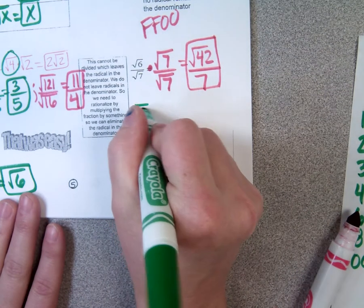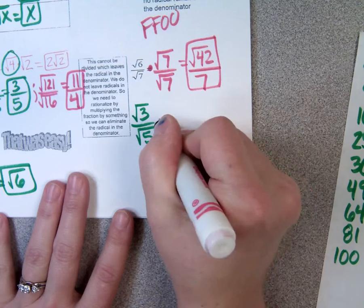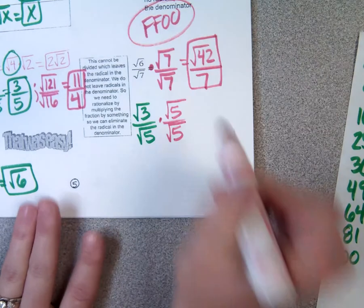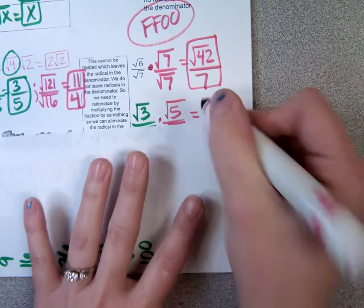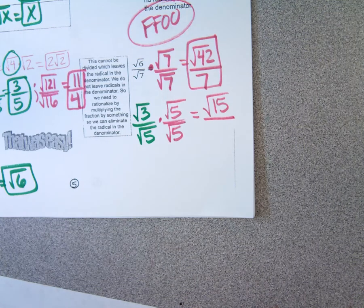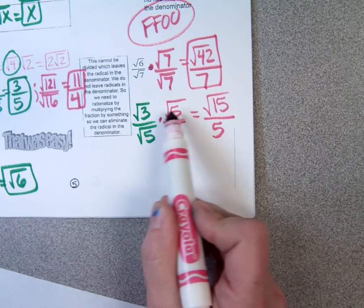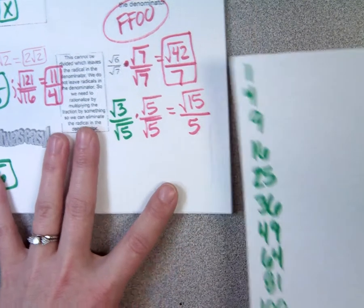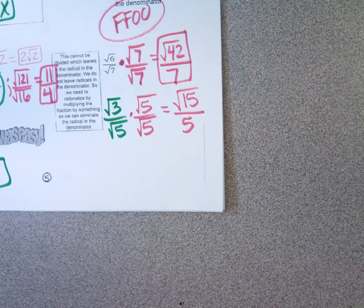Let's try square root of 3 over square root of 5. The foo-foo is square root of 5 over square root of 5 — whatever's in the denominator over itself. Multiply the numerators: square root of 3 times square root of 5 is square root of 15. Multiply the denominators: square root of 5 times square root of 5 is just 5. Check if 15 can be divided by any perfect squares: no. The answer is square root of 15 over 5.